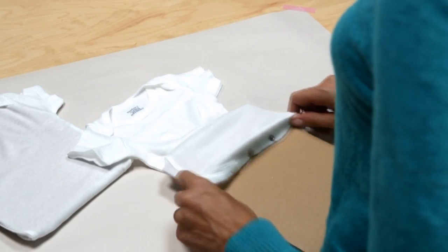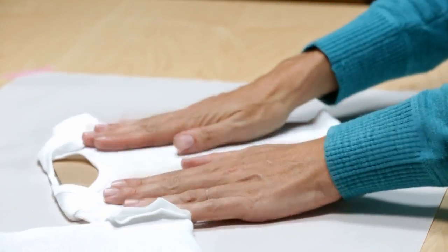Cut cardboard rectangles to fit inside each one piece. This makes decorating much easier and keeps the one piece from wrinkling.